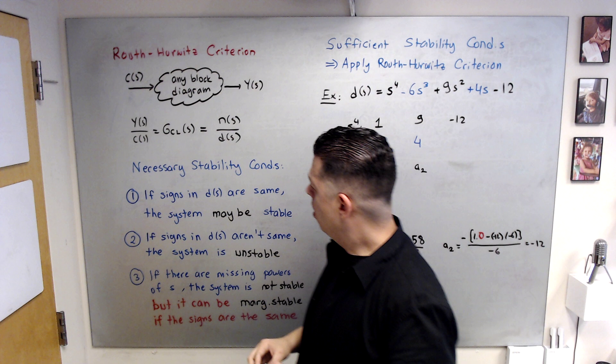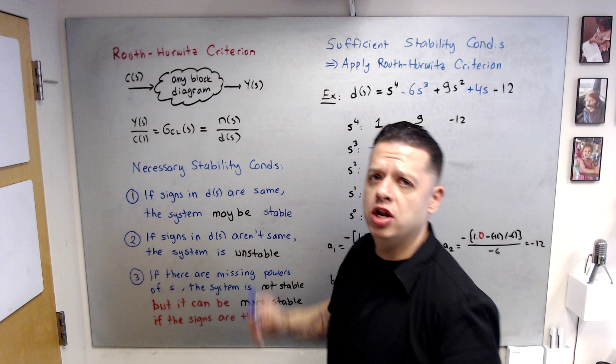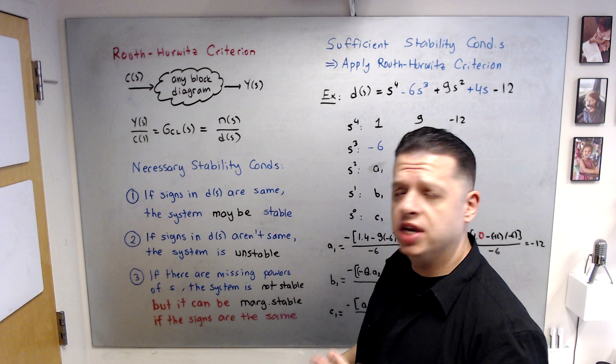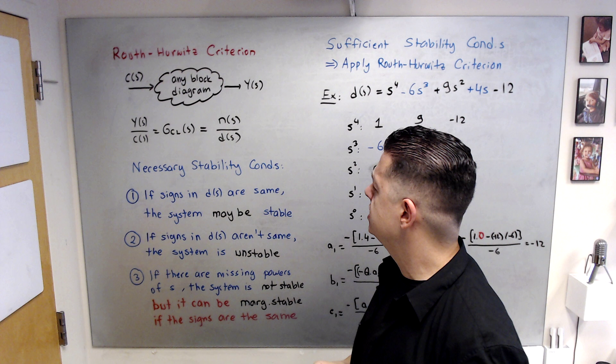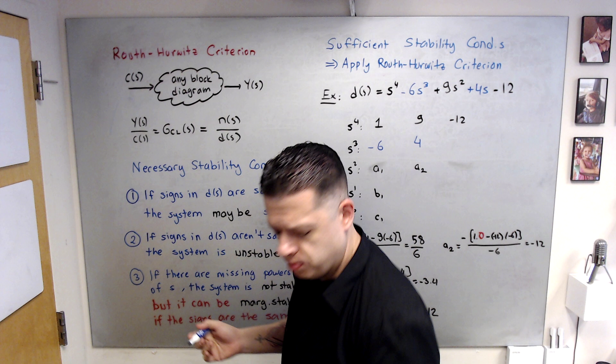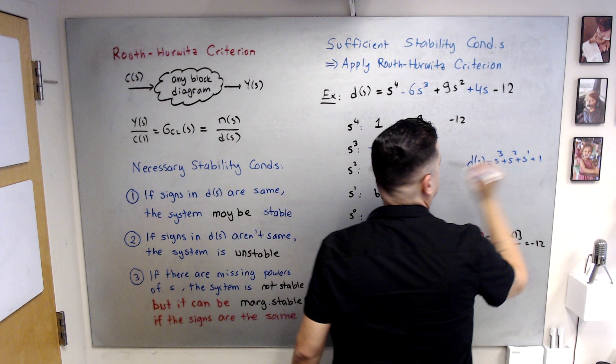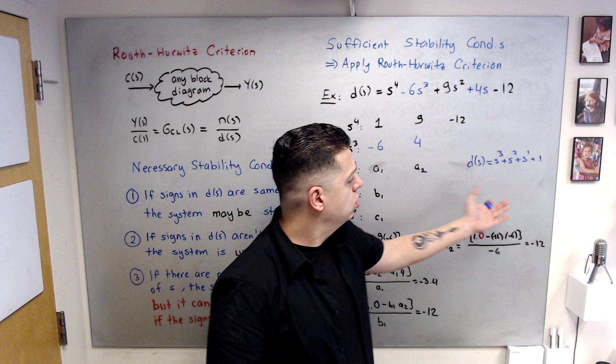Let's say you find your closed-loop system and you get your denominator. You can first check necessary stability conditions. Necessary stability conditions tell you three things. Number one: if the signs in this denominator are the same, then the system may be stable. For example, let's say d(s) is s³ + s² + s + 1. All the signs are the same, so the system may be stable.